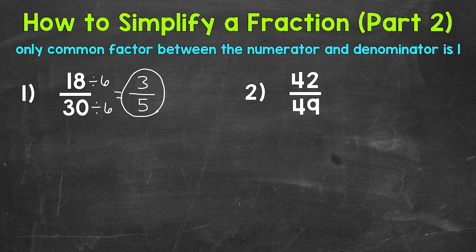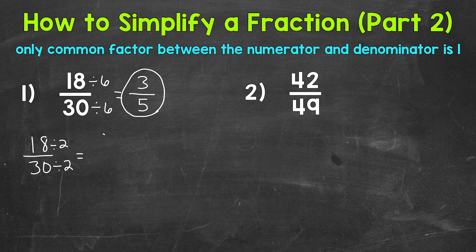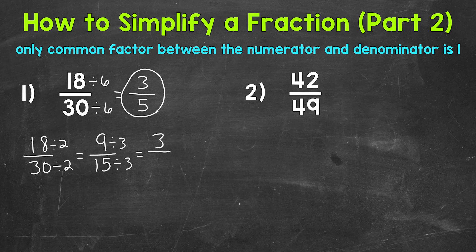Now let's do number one again and take a different path to get to simplest form. So let me rewrite 18 thirtieths. They were both even, so we have a common factor of two. Let's divide both by two: 18 divided by two is nine, and 30 divided by two is 15. Nine fifteenths is different than three fifths, but 9 and 15 have a common factor of three. So we divide both by three: 9 divided by three is three, and 15 divided by three is five. So we get three fifths that way as well.